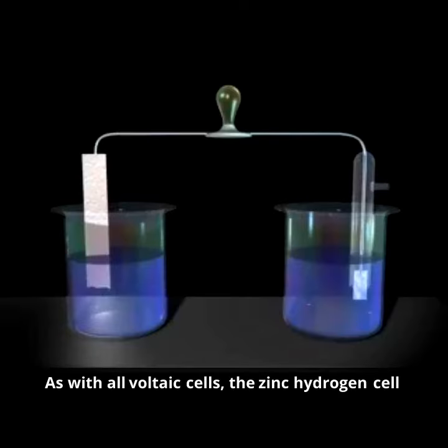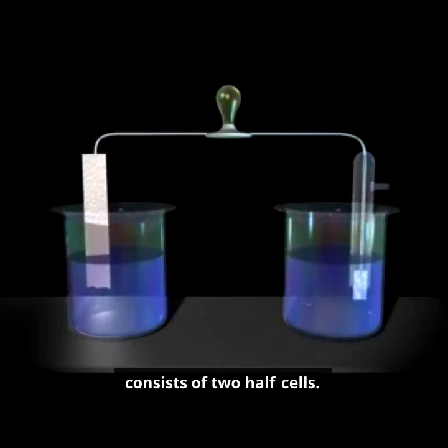As with all voltaic cells, the zinc hydrogen cell consists of two half cells. On the left is the zinc zinc ion half cell.